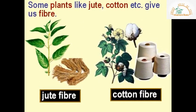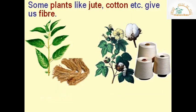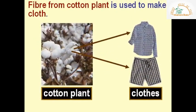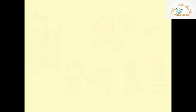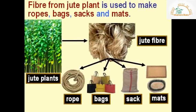Some plants like jute and cotton give us fibers. Fiber from the cotton plant is used to make cloth. Fiber from the jute plant is used to make ropes, bags, sacks, and mats.